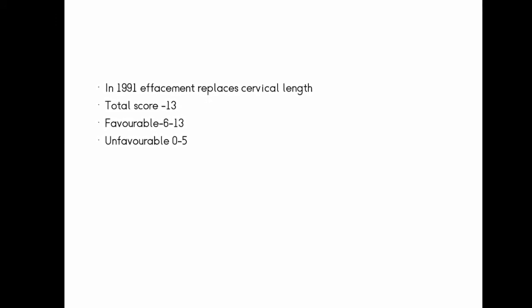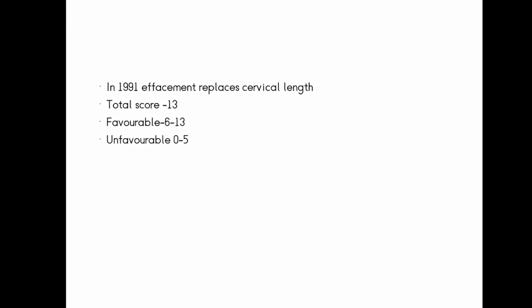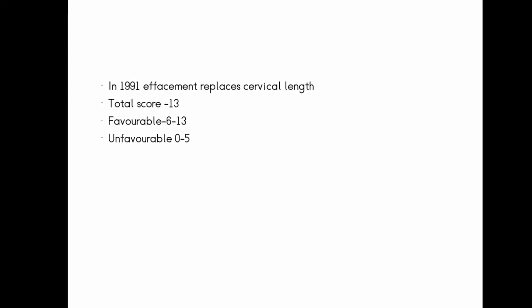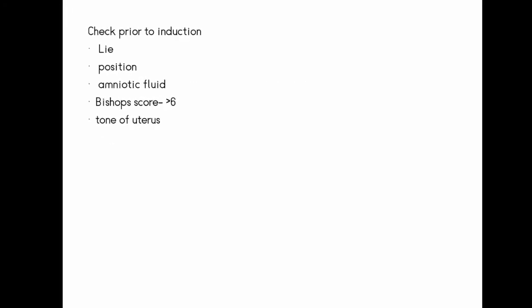If you have any indication for induction, you can check the fetus in the lie position and check the Bishop score. The total Bishop score is 13. A score of 6–13 indicates a favorable condition; a score of 5 or less is unfavorable.